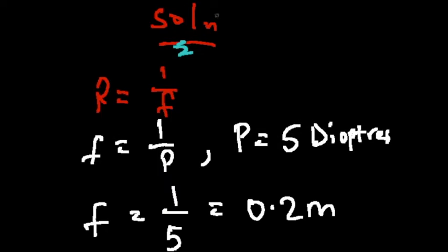Solution: we have that our power is equal to 1 over F, and so we can also say that our F is 1 over P, where our P is given as 5 diopters.